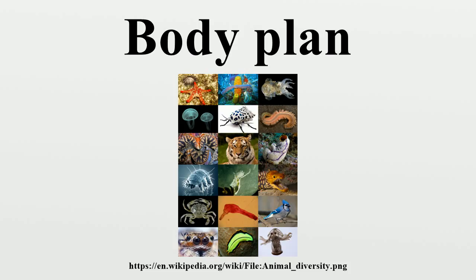Cuvier, 1817. In his 1817 work Le Règne Animal, the French zoologist Georges Cuvier combined evidence from comparative anatomy and paleontology to divide the animal kingdom into four body plans, taking the central nervous system as the main organ system which controlled all the others, such as the circulatory and digestive systems. Cuvier distinguished four body plans: I. With a brain and a spinal cord. II. With organs linked by nerve fibers. III. With two longitudinal ventral nerve cords linked by a band with two ganglia below the esophagus. IV. With a diffuse nervous system, not clearly discernible. Grouping animals with these body plans resulted in four branches: vertebrates, mollusks, articulata, and zoophytes or radiata.